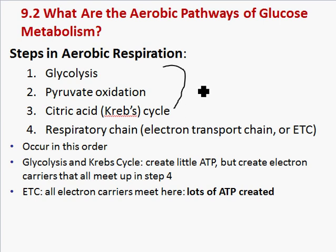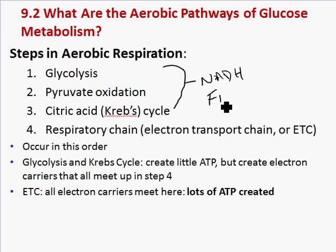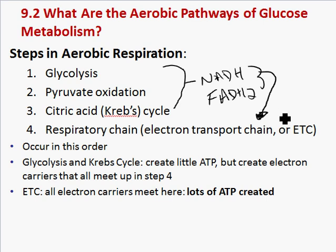The products of steps one, two, and three create just a little bit of ATP, but they create lots of electron carriers — NADH and FADH2 — that are all going to come to the electron transport chain and drop off their electrons. That's where we're going to make lots and lots of ATP.